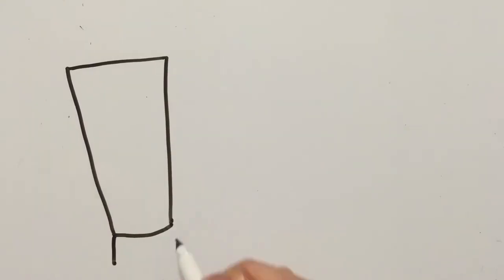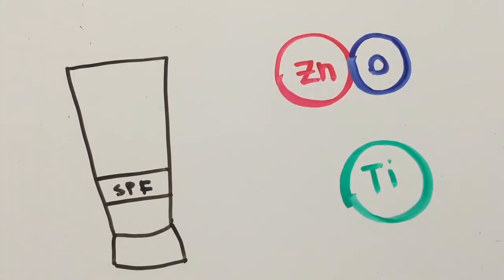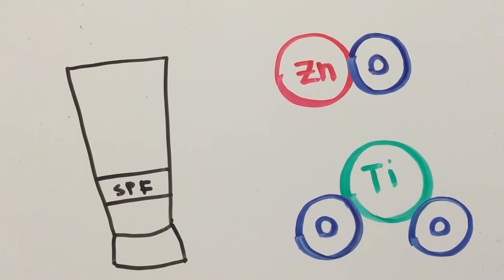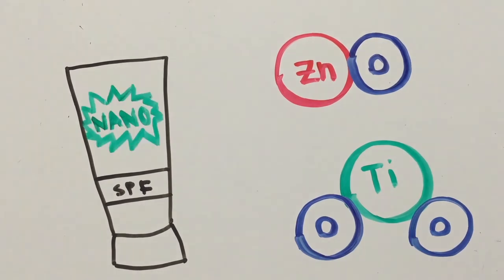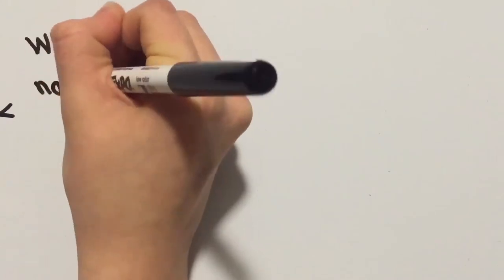But sunscreens can be made even better if the titanium or zinc oxide materials can be made extremely small within the nanoscale. What exactly is a nanoparticle?